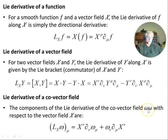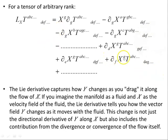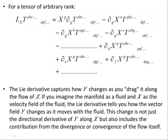The Lie derivative of a co-vector field omega with respect to the vector field X gives components as shown. And here is the Lie derivative for a general tensor of contravariant rank r and covariant rank s — this is the general form. The next video in the playlist will show you how this comes about.